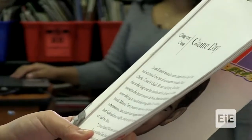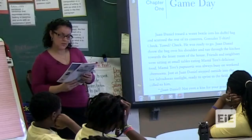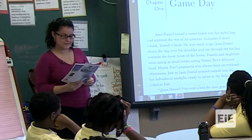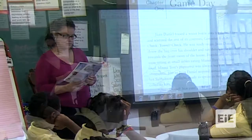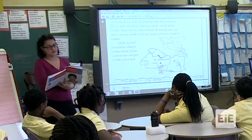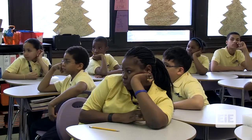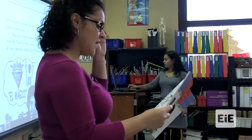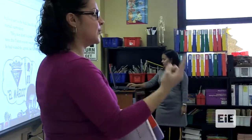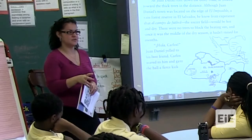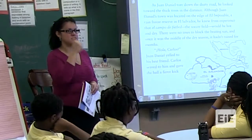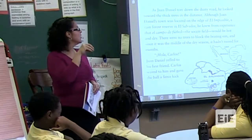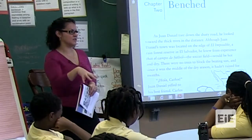Chapter one: Game Day. Juan Daniel tossed a water bottle into his duffel bag and scanned the rest of his contents. Gonzalez t-shirt? Check. Juan Daniel jogged out and started warming up. I want to stop for a second. What was the problem with the soccer field? I want you in your group to discuss — what was the problem with the soccer field? Think about what El Salvador was like and what the climate was.